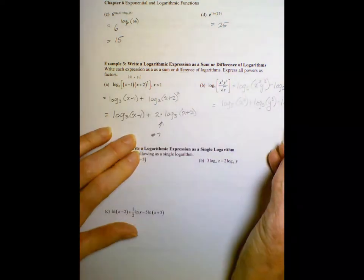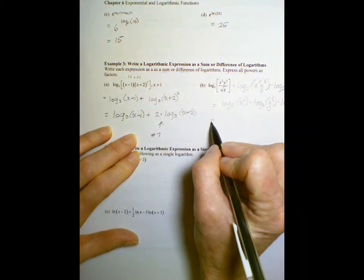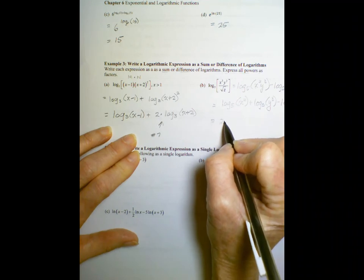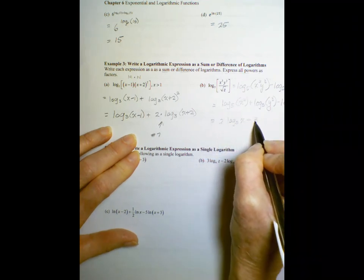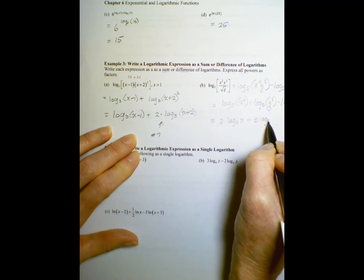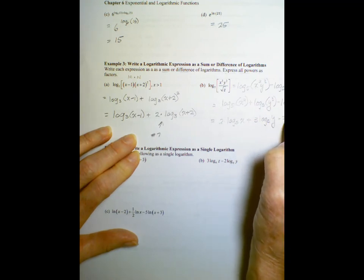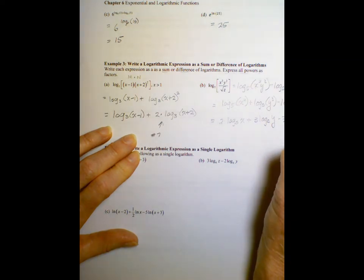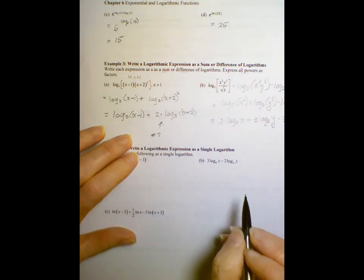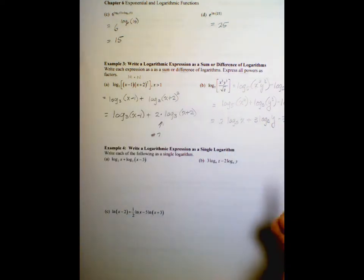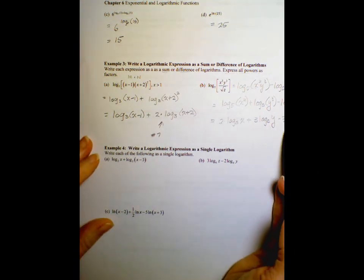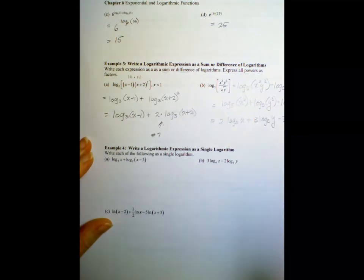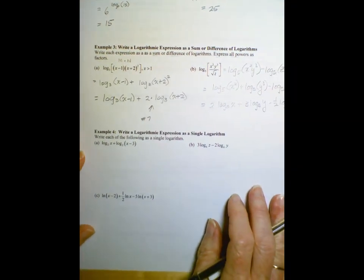And finally, express all powers as factors using property 7. This is 2 times the log base 5 of x plus 3 times the log base 5 of y minus 1 half times the log base 5 of z. So we're really just breaking these logs apart. Now this is really just practice to get our understanding, but the main thing we're going to be doing to solve log equations.